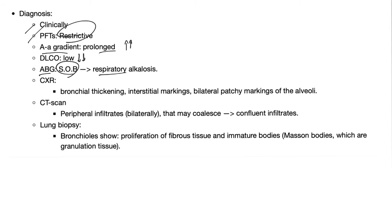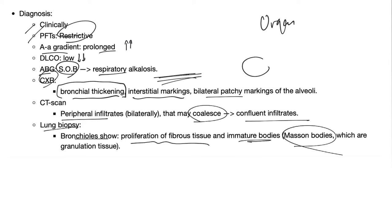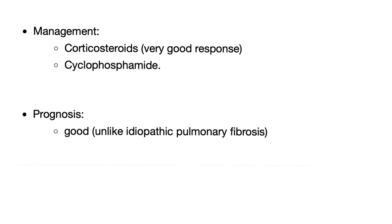ABG will show hypoxia leading to respiratory alkalosis. On chest X-ray: bronchial thickening (bronchiolitis obliterans), interstitial markings representing fibrosis, and bilateral patchy markings of the alveoli representing alveolitis — all organizing pneumonias share this chronic alveolitis. On CT scan, you'll see peripheral infiltrates that may coalesce into confluent infiltrates. Lung biopsy will show bronchioles with proliferation of fibrous tissue and immature bodies called Masson bodies — that's why we call it bronchiolitis obliterans.